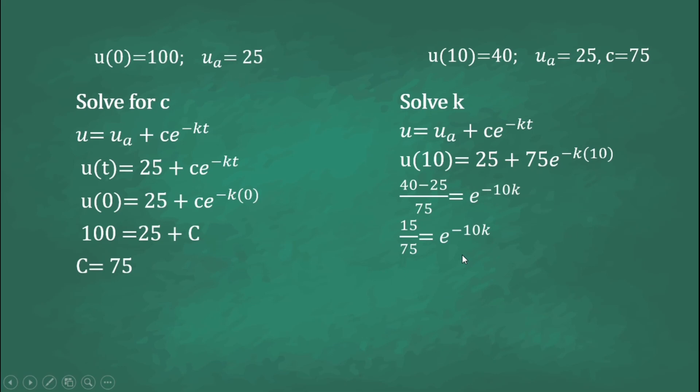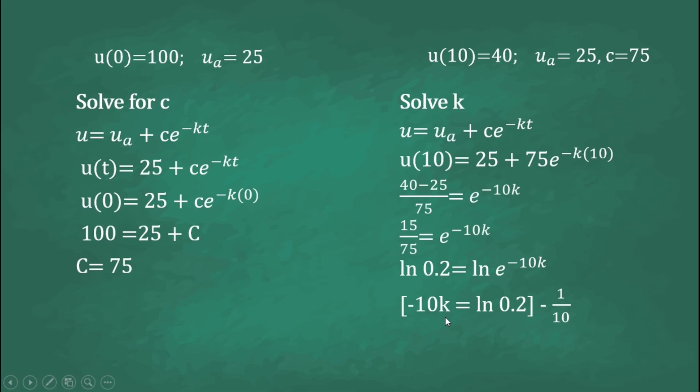To cancel the e, we take the natural log of both sides. ln(0.2) equals ln(e raised to negative 10k), which simplifies to negative 10k equals ln(0.2). Multiplying both sides by negative 1 over 10, the final answer for k is approximately 0.16094379124.